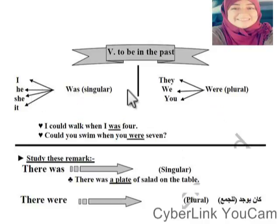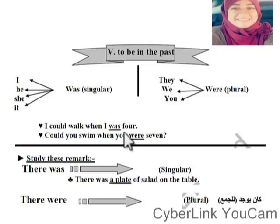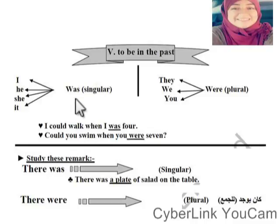'Was' comes with I, she, he, it. 'Were' comes with they, we, you. For example: 'I could walk when I was four.' 'Could you swim when you were seven?' So 'was' and 'were' are the past forms of verb 'to be'. We know what 'was' comes with and what 'were' takes.